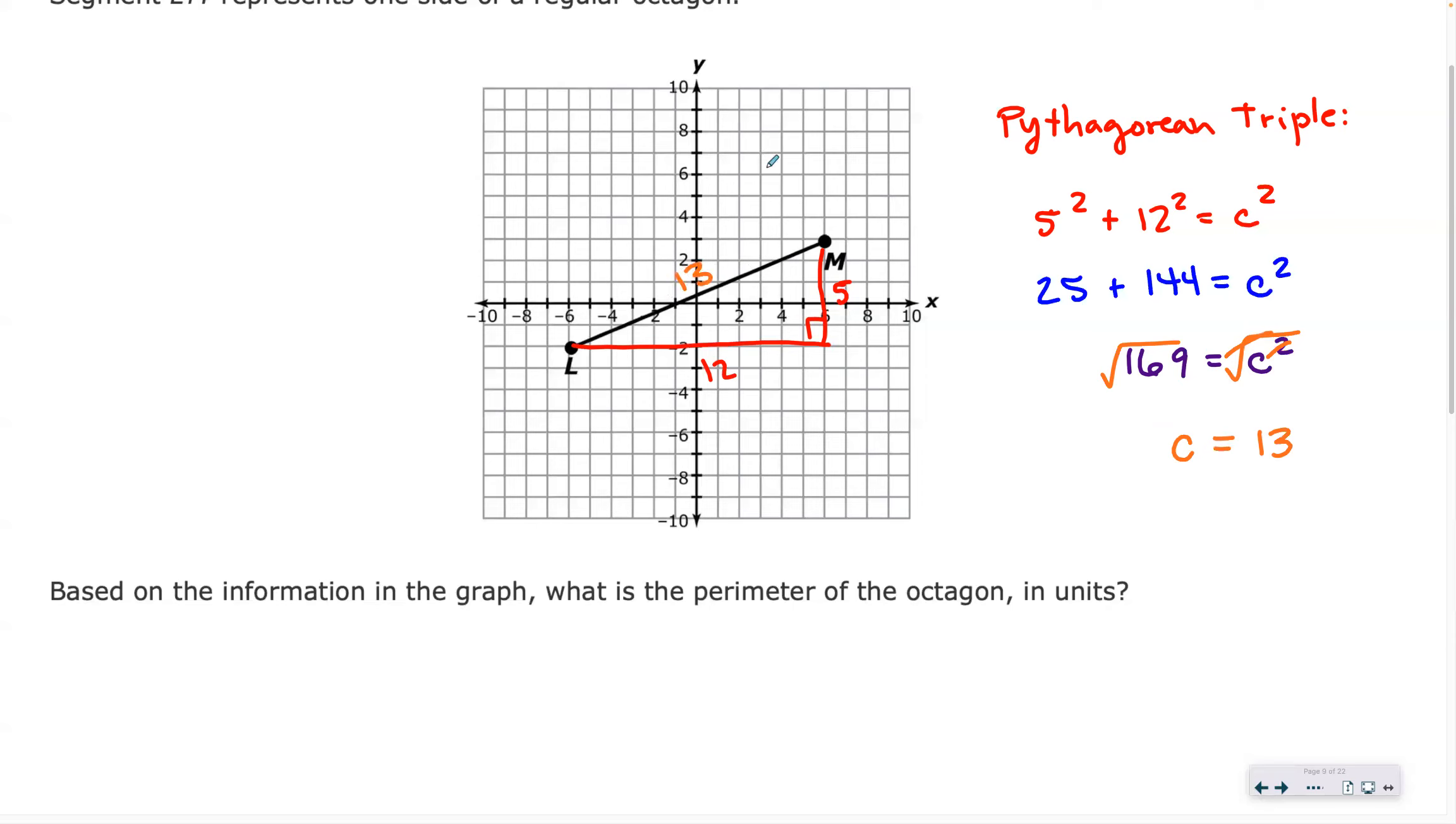How many sides does the octagon have again? Eight. So it'll be 8 times 13, which is 104 units. Very good.